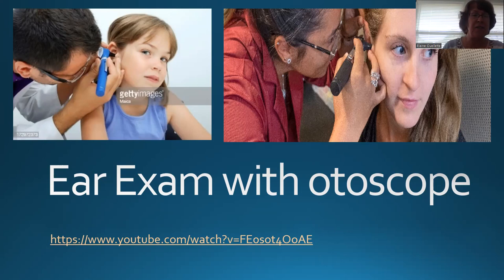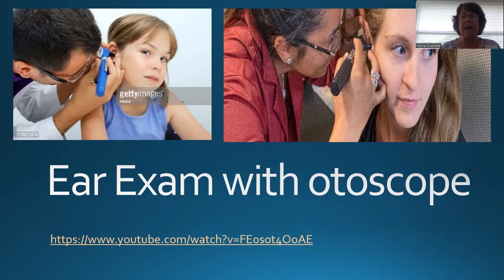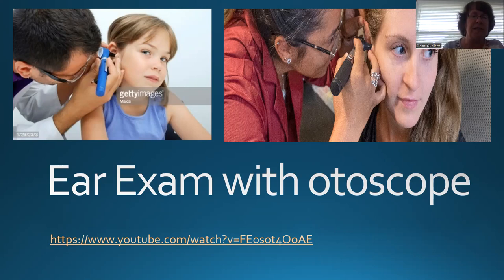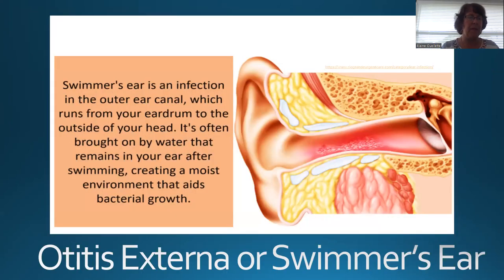Remember that the ear canal is not straight. For a small child, you may need to pull the ear straight back or downward, while for an older child or adult it needs to be pulled back and upward. You'll need to move both the outer ear and the otoscope up and down and back and forth to get the best position to see the whole eardrum. When examining ears, always check the one that doesn't hurt first so you can compare it to the other.